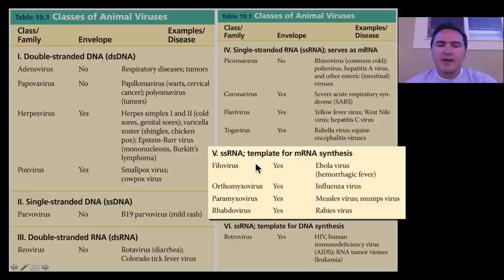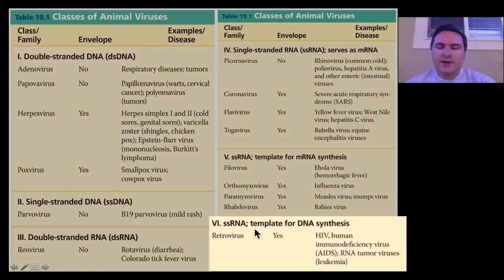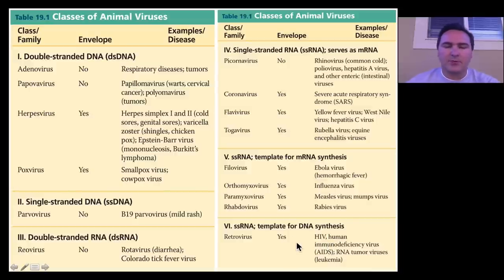Then you can have single-stranded RNA viruses that serve as a template for mRNA synthesis — they're used to just make more mRNAs. Things like this are the Ebola virus, influenza virus, and rabies. Or you can have single-stranded RNA viruses that then become a template for DNA synthesis, and HIV is one of these, for example. And that's the one that we'll be looking at in more detail.